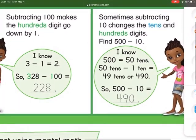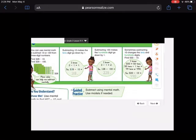Sometimes subtracting 10 changes the tens and hundreds digits. So in 500 minus 10, well, we know that 500 equals 50 tens. And if we take away one of those tens, it's going to equal 49 tens or 490. So 500 minus 10 equals 490.